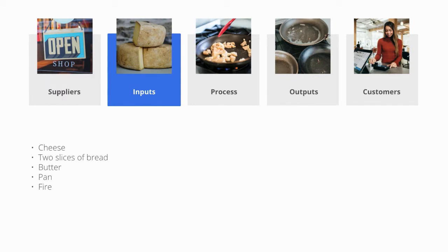Moving on to Inputs. Inputs are the raw materials for the process. Your inputs are dependent on the type of work you're doing. Inputs can range from data, to salad ingredients, to unrefined metals. In this example, our inputs are cheese, two slices of bread, butter, pan, and fire.